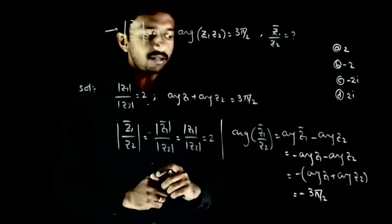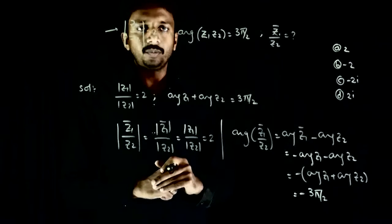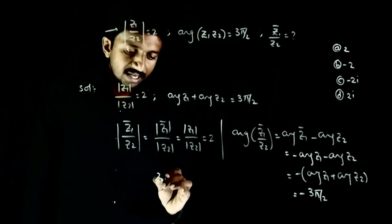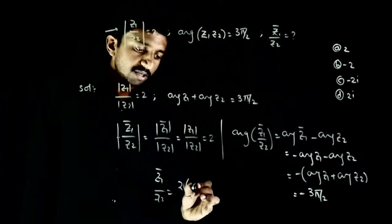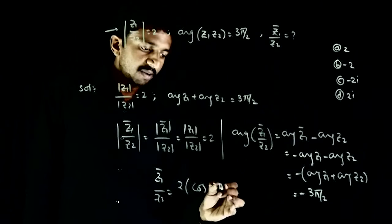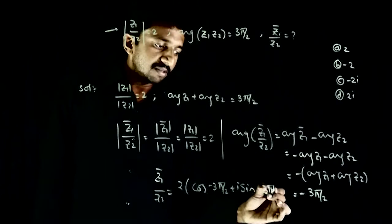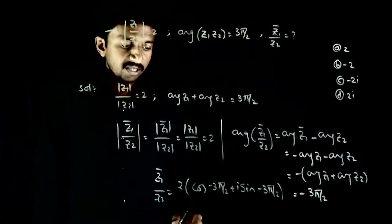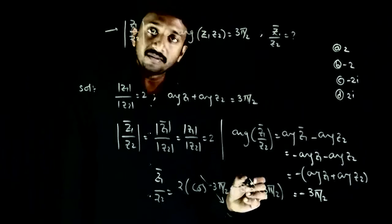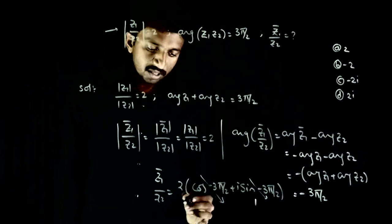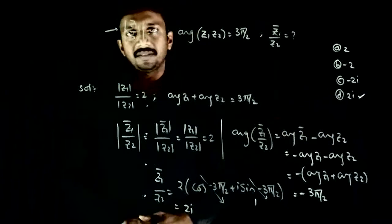So this complex number has modulus 2 and argument minus 3π/2. We can write z1 bar by z2 equal to 2·(cos(−3π/2) + i·sin(−3π/2)). cos(−3π/2) is 0 and sin(−3π/2) is 1, so the complex number is 2i. Therefore option D is the right answer.